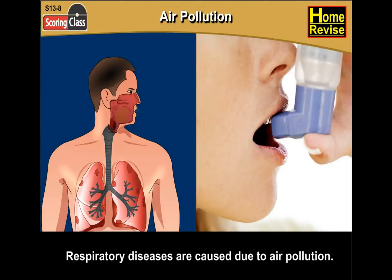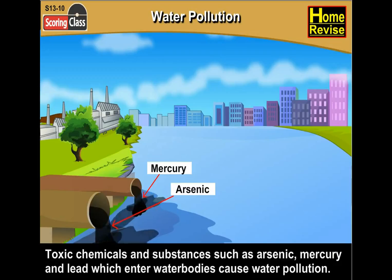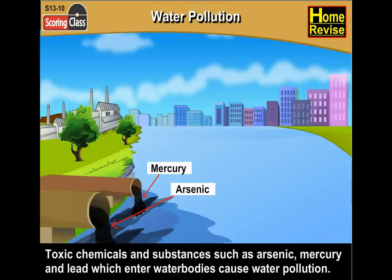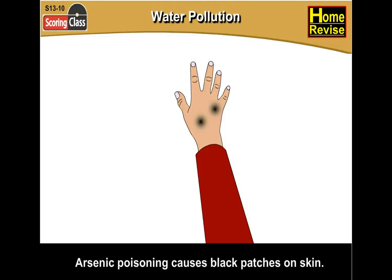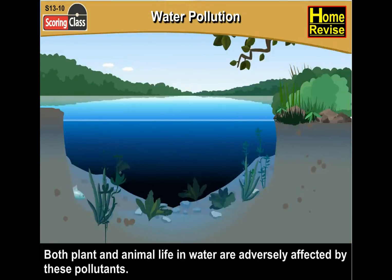Air pollution is quite dangerous. Water pollution is caused by toxic chemicals and substances such as arsenic, mercury, and lead, which enter water bodies. Arsenic poisoning causes black patches on skin. Death can result from mercury or lead poisoning. Both plant and animal life in water are adversely affected by these pollutants.